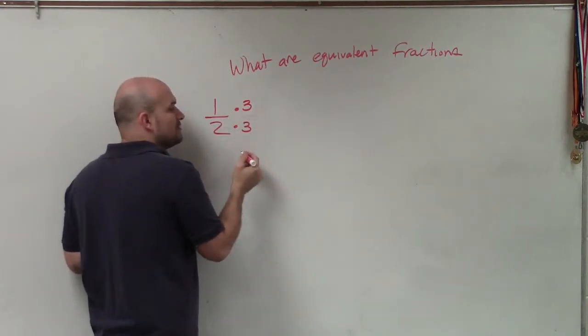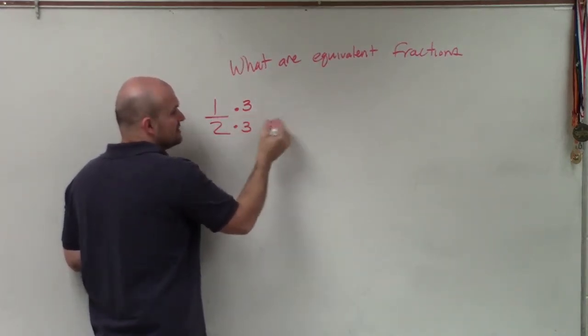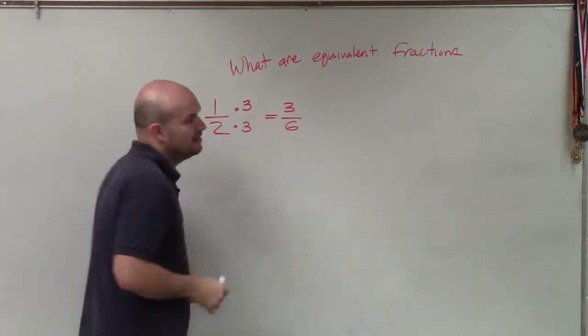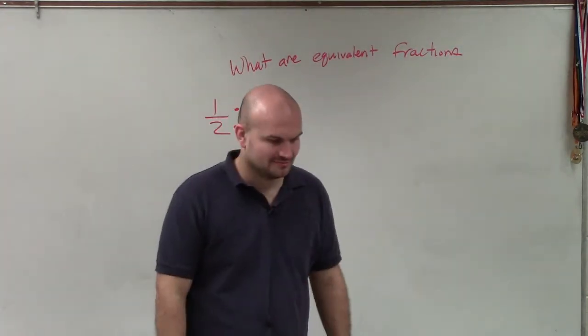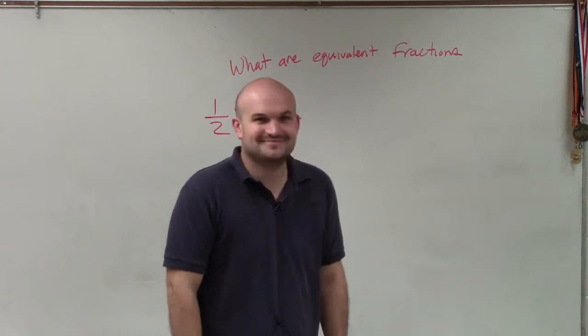If I multiply by three over three, three in the numerator, three in the denominator, then I produce three sixths. Excuse me. That was really odd.